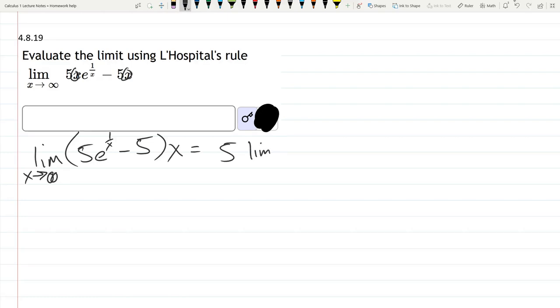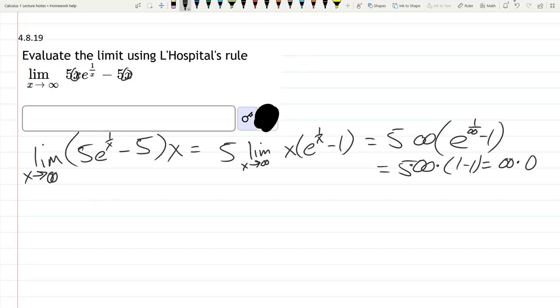So we have a limit x times (e^(1/x) - 1). Now if we take the limit here, we have 5 times infinity times (e^(1/∞) - 1). And this e^(1/∞) is e^0, which is 1. So it's 5 times infinity times (1 - 1), which is infinity times 0. Whenever you get this, you need to turn it into a fraction.